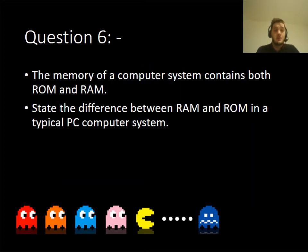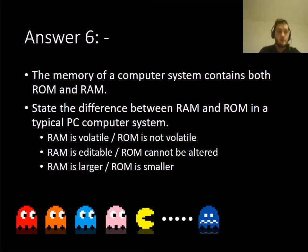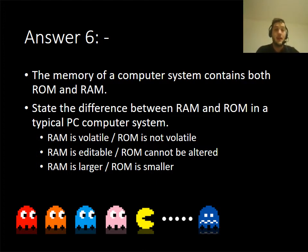The next question was: what is the difference between RAM and ROM? RAM is volatile — when you turn the computer off, you lose anything stored in RAM. ROM, read-only, means it can't be changed; we don't lose any data and it's non-volatile. RAM is editable — anything going in or out can change — whereas ROM can't be altered. RAM is larger; you can get up to 8 gigabytes, whereas ROM is usually about 2 megabytes.